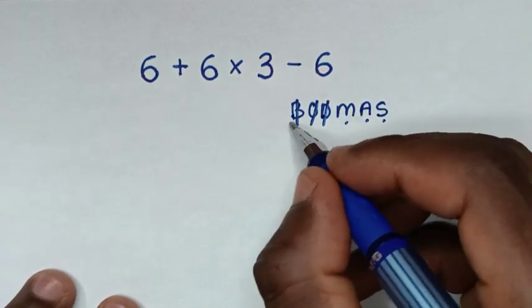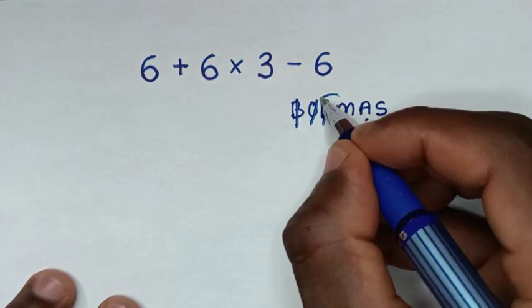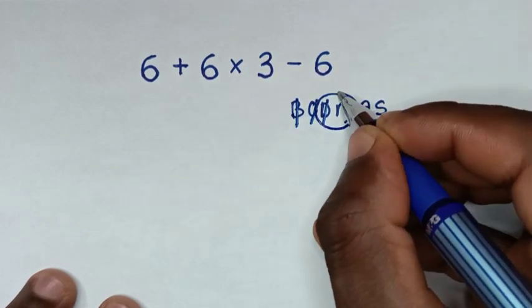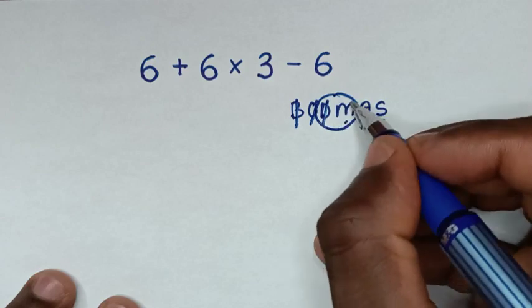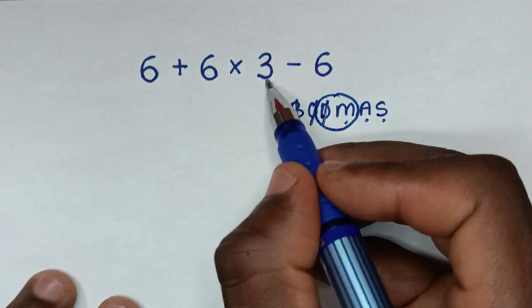So from this rule we will start with the group of division and multiplication. Whereas we don't have division, we have only multiplication. So we'll do multiplication of 6 times 3, it is 18.